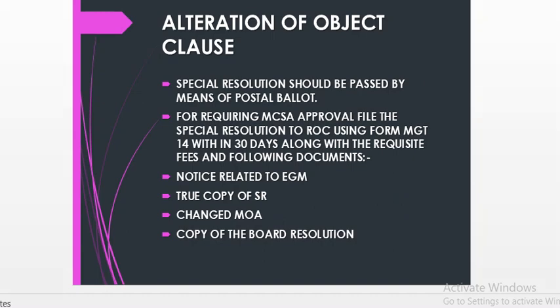A special resolution has to be passed by means of postal ballot, and a three-fourths majority is required — 75% voting must be in favor of the change in the objective clause. We have to get the approval of the shareholders by passing this special resolution.